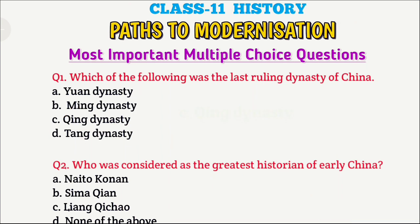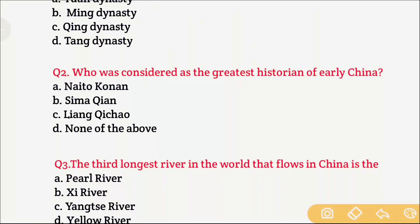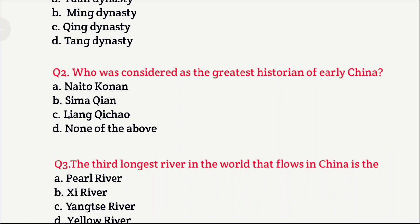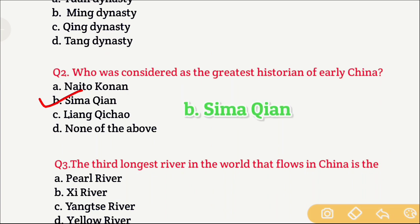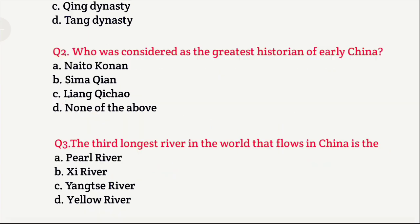Question 2: Who was considered the greatest historian of early China? Option A is Naito Konan, Option B is Sima Qian, Option C is Liang Qichao, and Option D is none of the above. The right answer is Option B, which is Sima Qian.